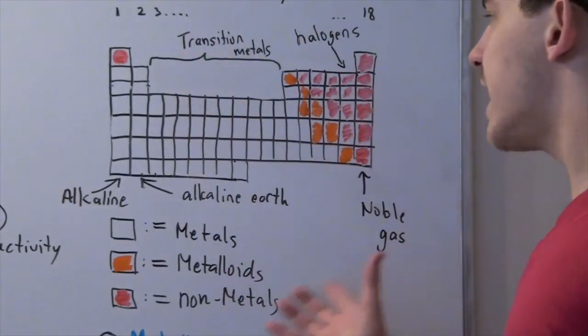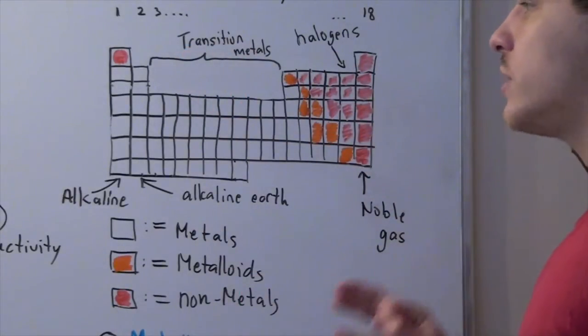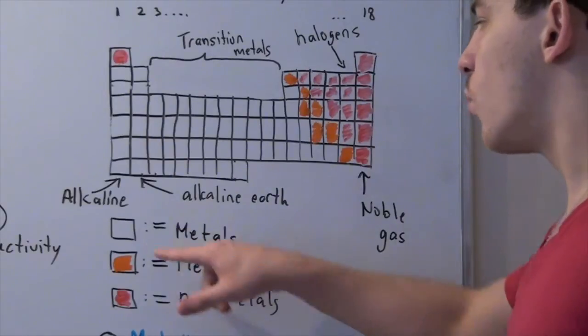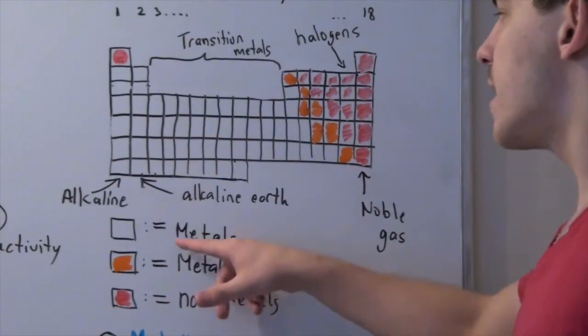Now, these guys, or this table, is divided into three main divisions, known as metals, non-metals, and metalloids. Now, the white squares, or the white elements, are known as metals.